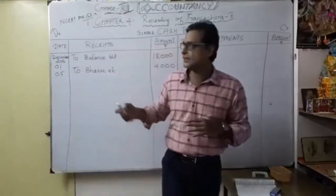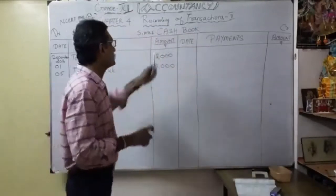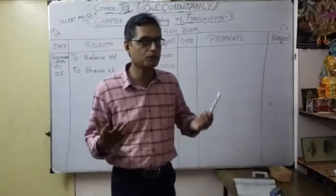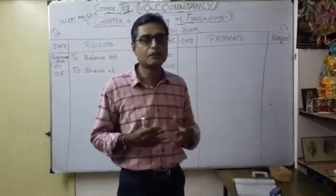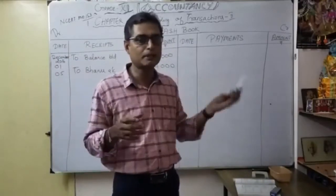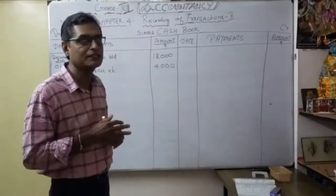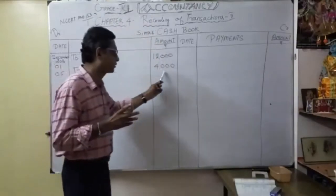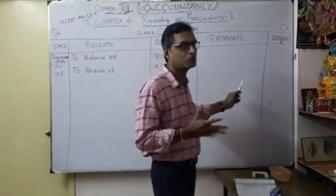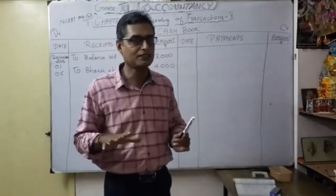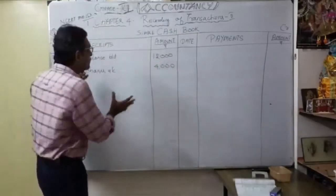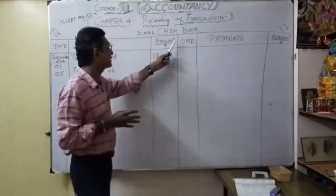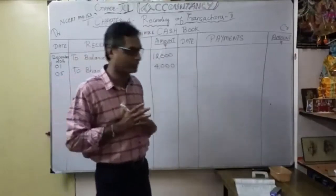My request: please once again, you have to process general entries and then do the posting. As you are in the learning stage, practice journal entries and then come to the cash book. In the Banu account you write 'By cash account.' Here, no need to open Banu account because you are learning only the cash book. We are doing only the debit and credit part related to cash transactions only. Cash account debit to Banu account 4000 — in the cash book, debit side I write 'To Banu account 4000.'